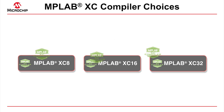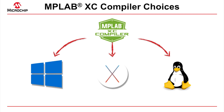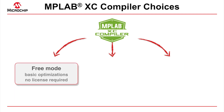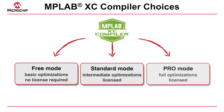Each compiler is available for Windows, Mac OS X, and Linux hosts. The compiler can be run in one of three operating modes: Free, Standard, or Pro. These modes set the level of optimisation when compiling a project, and they determine how much memory your code will require and how fast your code will execute.